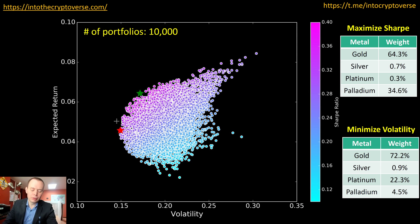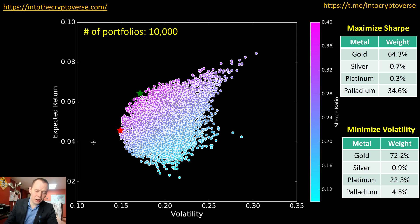You shouldn't dwell too much on these numbers — I'm just showing how they converge as we run more portfolios. With 10,000 portfolios, things aren't changing quite as much. To maximize the Sharpe ratio, it's around 64% gold, 0.7% silver, 0.3% platinum, and 34% palladium. To minimize volatility — the leftmost point on the efficient frontier — it found 72% gold, 1% silver, 22% platinum, and 4.5% palladium. Points below this curve would be the inefficient frontier — for the same risk you could get a much higher expected return.